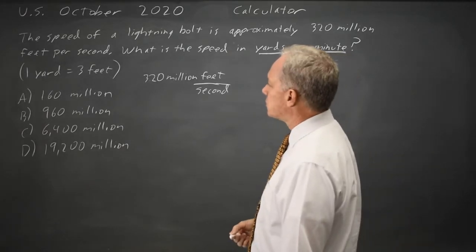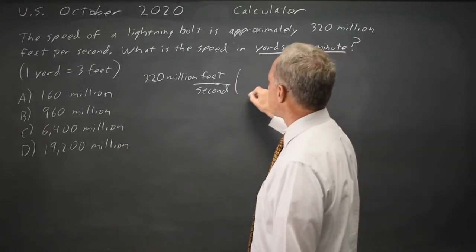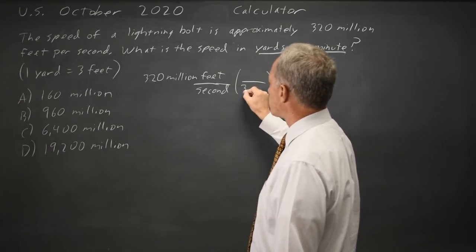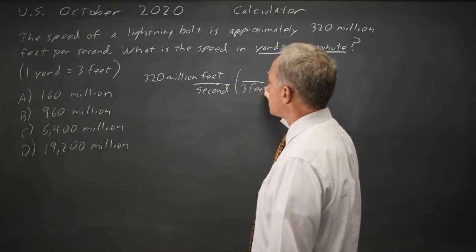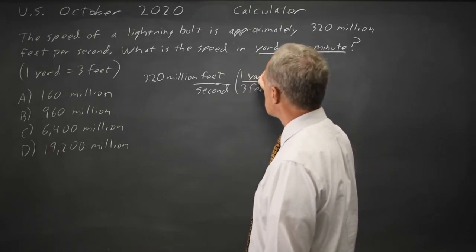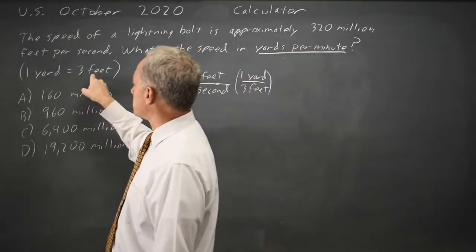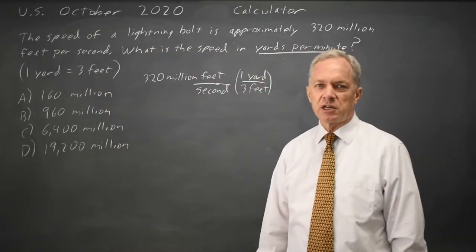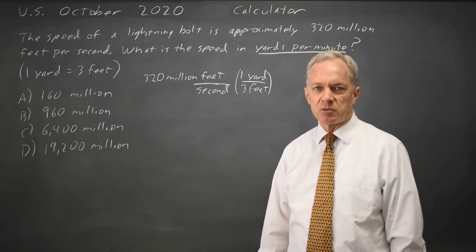I want to convert to yards so I'm going to multiply by a factor that's equal to 1 and I want feet in the denominator so I'll put 3 feet in the denominator and 1 yard in the numerator because 1 yard is equal to 3 feet, so 1 yard over 3 feet is equal to 1 and I'm allowed to multiply by anything equal to 1.